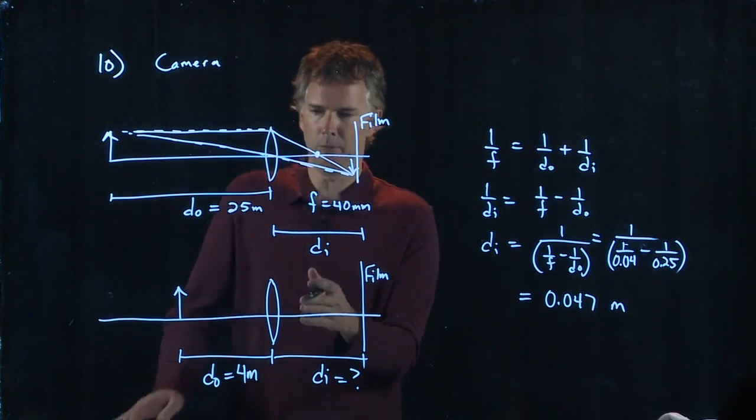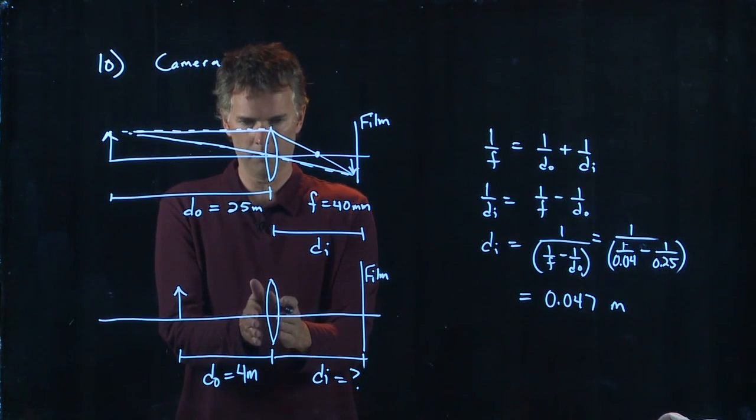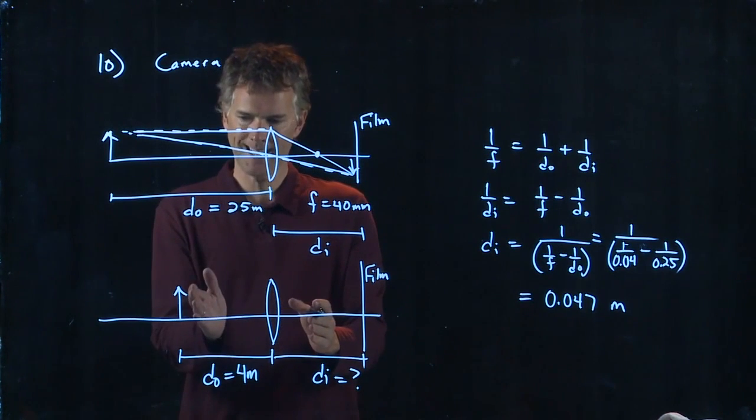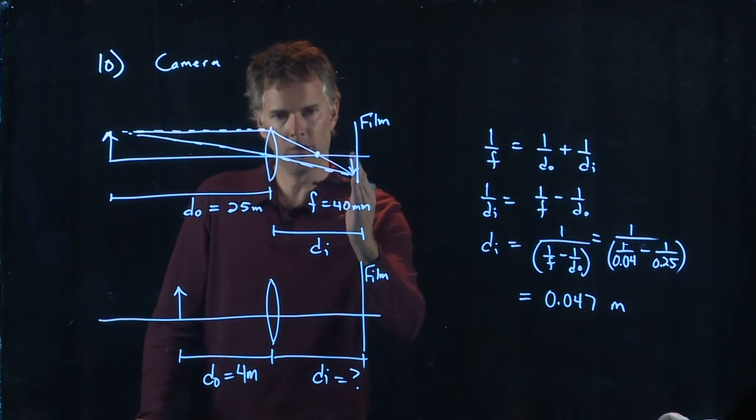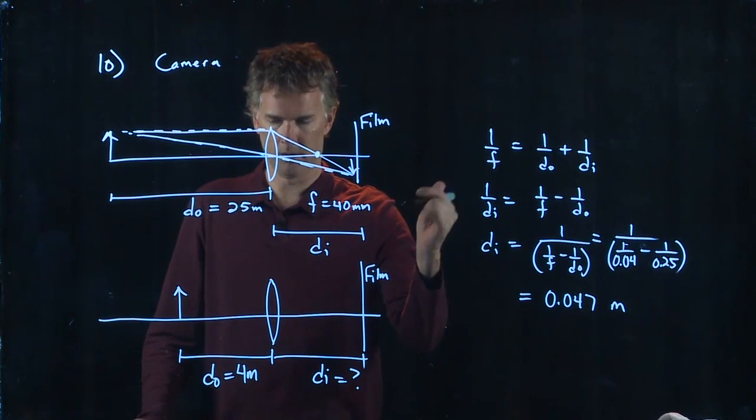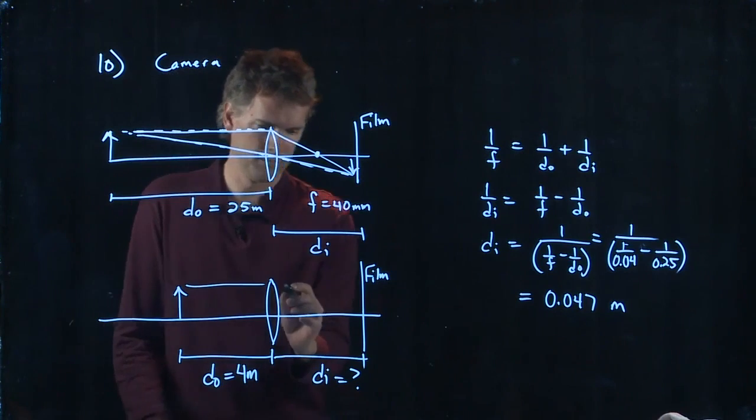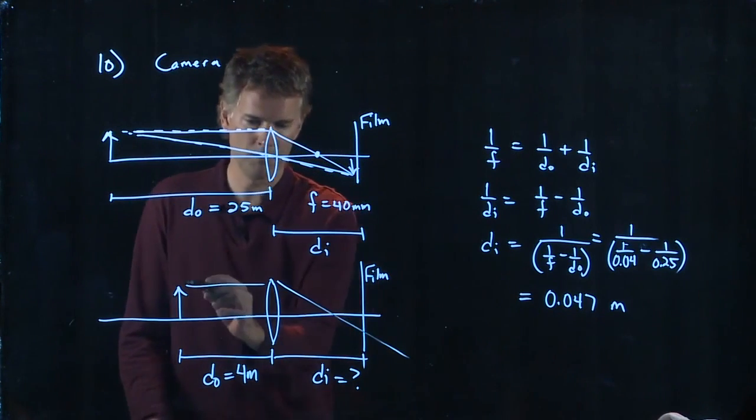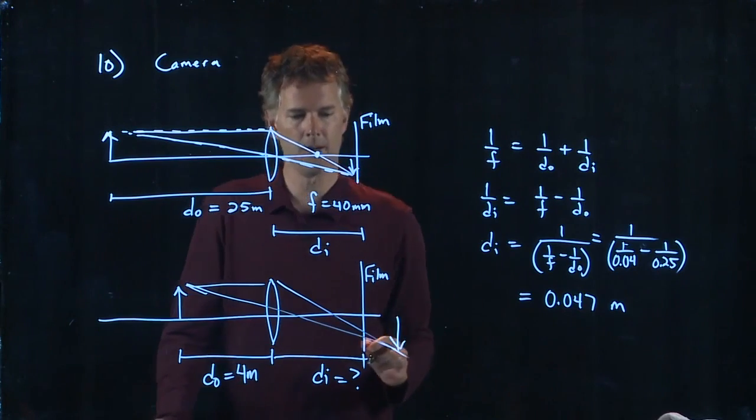So if we had left the lens exactly where it was and I brought that object in, would the image move closer to the focus or further away from the focus? It would in fact move further away from the focus. So you still follow your lens rules, but the image would be out here.